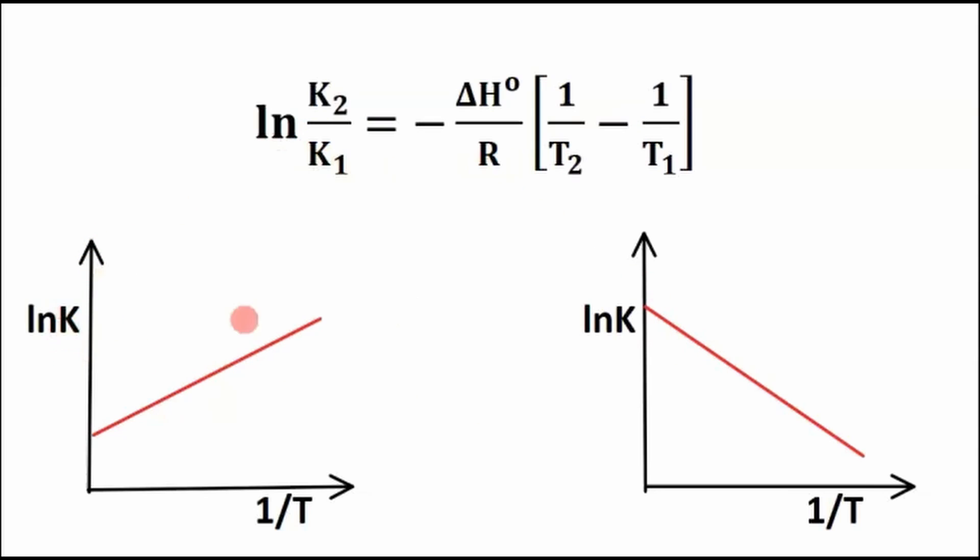On the y-axis of these graphs is ln K, and on the x-axis is 1 over T. Now this might look somewhat complicated, but really in this form,